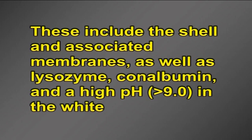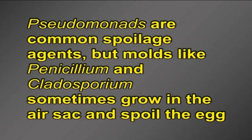Eggs have several intrinsic parameters which help to protect the nutrient-rich yolk from microbial attack. These include the shell and associated membranes as well as lysozyme, conalbumin and a high pH (greater than 9) in the white. Freshly laid eggs are generally sterile but soon become contaminated with numerous genera of bacteria. Eventually these microorganisms will penetrate the egg shell and spoilage will occur. Pseudomonas are common spoilage agents, but molds like Penicillium and Cladosporium sometimes grow in the air sac and spoil the egg.